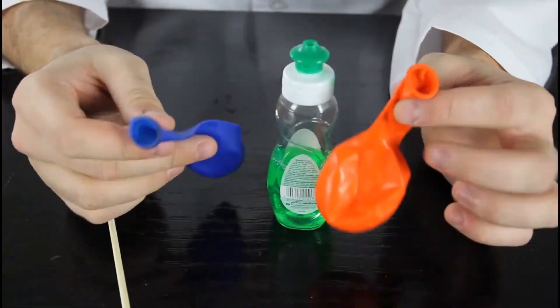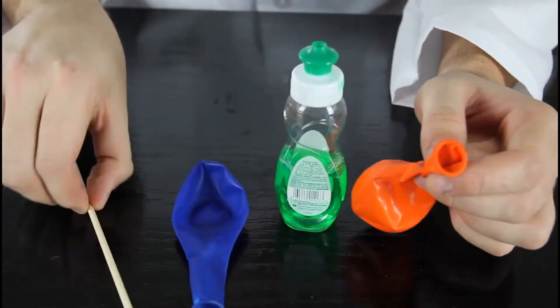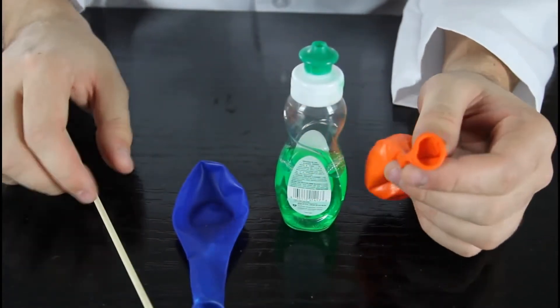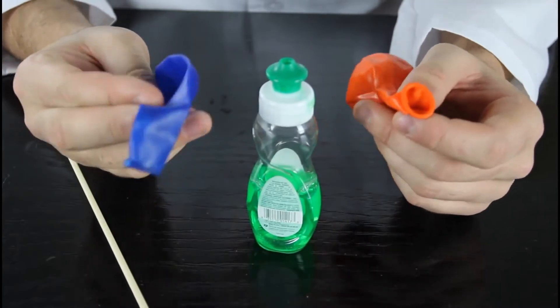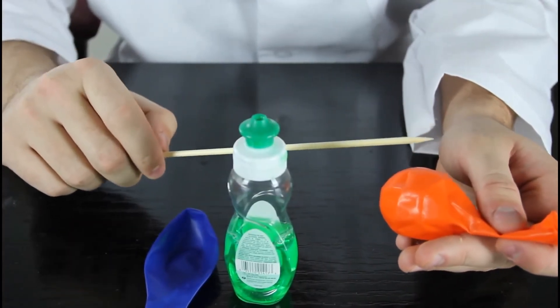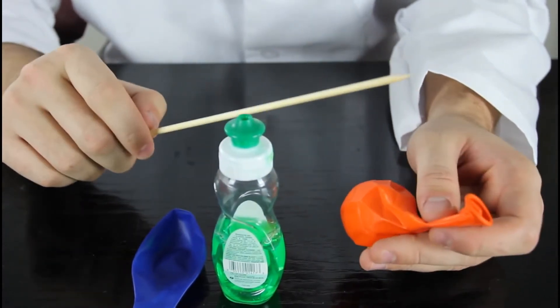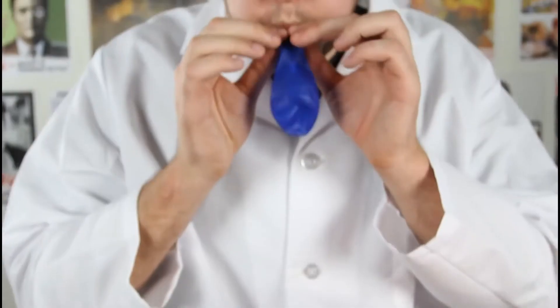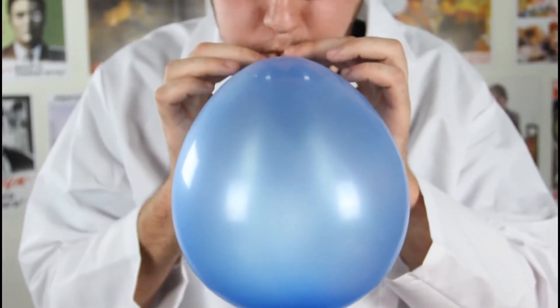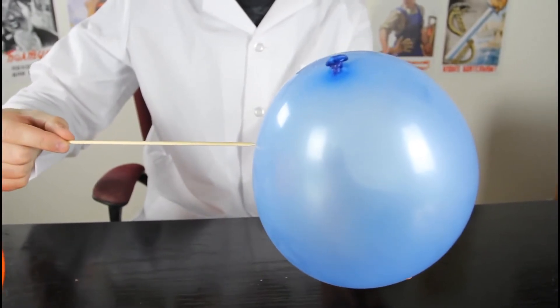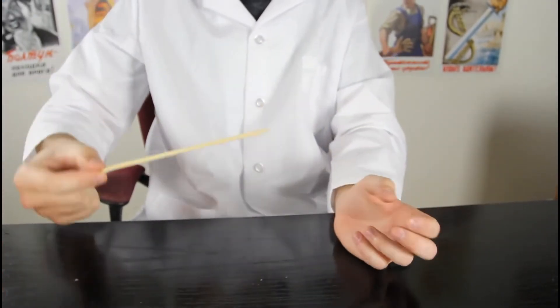Alright, for this experiment we're gonna need two balloons, soap, and a squirrel, the shishkaba stick to grill the meat on it. So anyways we're gonna blow up two balloons and then we're gonna put the squirrel to the balloons, first time without soap and second time with soap. And we'll see what happens. Alright, and now we're gonna try to put the squirrel to the balloons, see what happens.